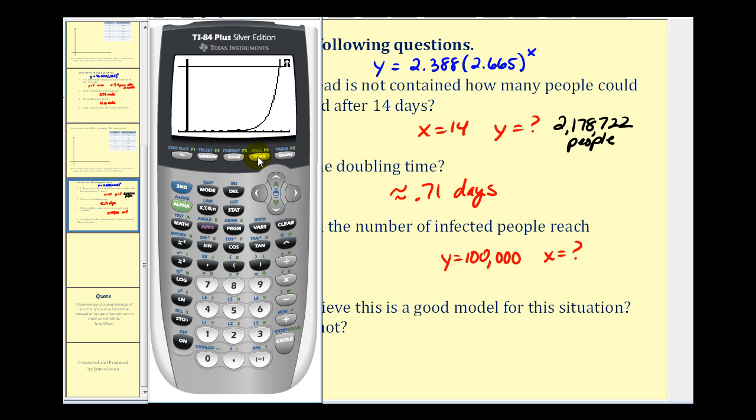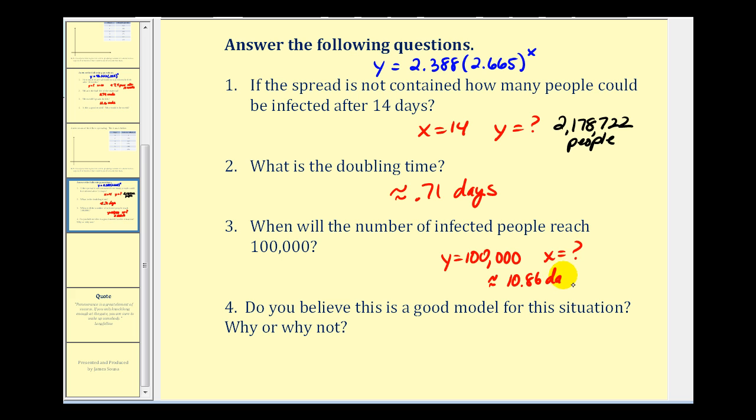So we'll press second, trace for the calculation menu, option five, enter, enter, and then before we press enter on guess, we'll move the cursor closer to that point of intersection. Press enter one more time. So it's going to occur at approximately 10.86 days. Again, according to the model. You can see why a model for the spread of a new disease would be very important because it gives some very valuable information for our public health.